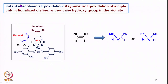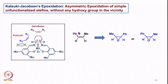Then we looked at Katsuki-Jacobsen epoxidation using salen complexes. This involves epoxidation of unfunctionalized olefins to the corresponding epoxides. We saw how the mechanistic proposals of Jacobsen and Katsuki were implemented in these oxidations.